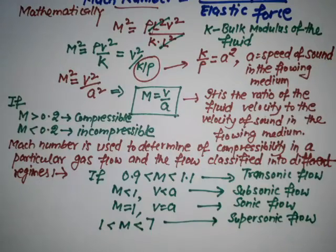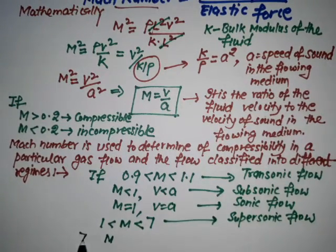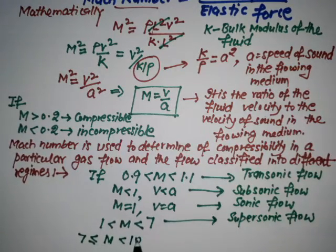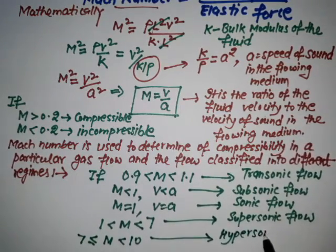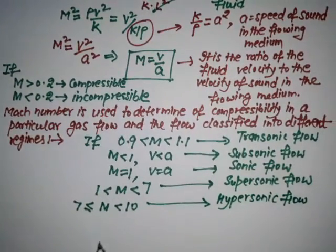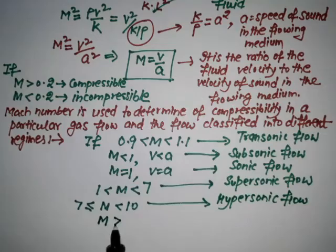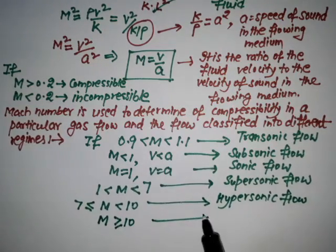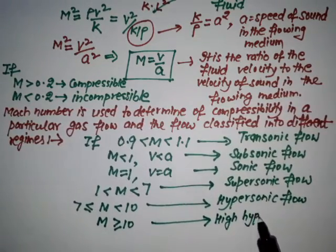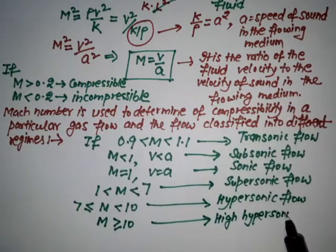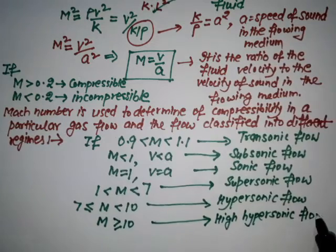If M lies between 7 and 10, it is hypersonic flow. If the value of M is greater than or equal to 10, then it is high hypersonic flow.